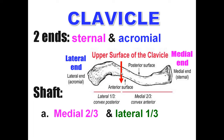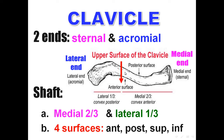The weakest point of the clavicle is the junction between the medial two-thirds and the lateral one-third. That is why the common site of clavicle fracture is the middle third. The shaft has four surfaces: upper surface, lower surface, anterior, and posterior.